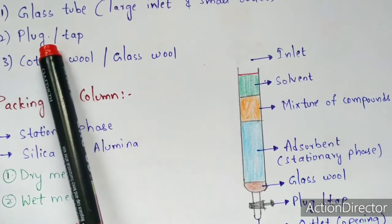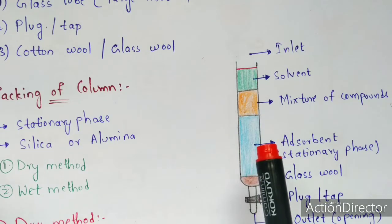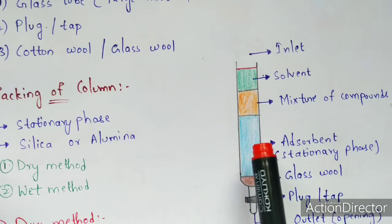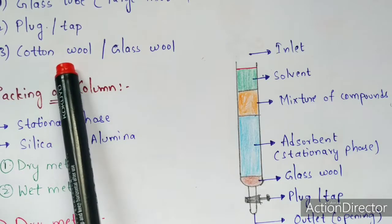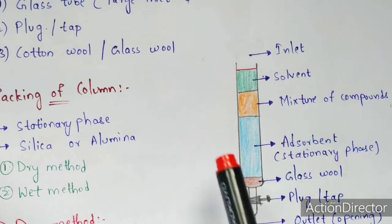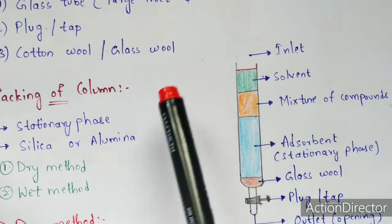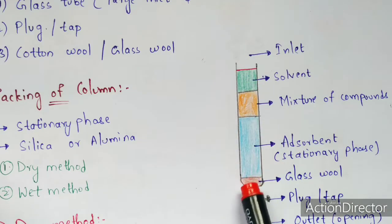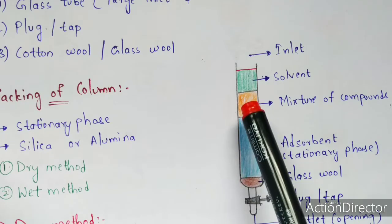A plug or tap plays a major role in preventing leakage of solvent and solute from inside the tube. Cotton wool or glass wool is placed inside the tube before experimentation; it settles at the base of the tube and its main purpose is to prevent the flow of mixture components into the outer environment.